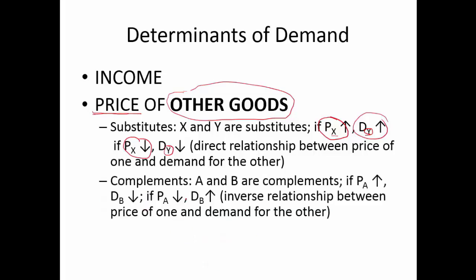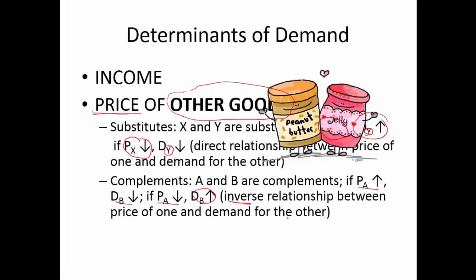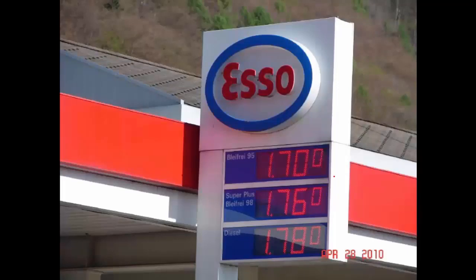Goods can also be complements — they're used together in consumption. If the price of A rises, demand for B declines, because the quantity demanded of A goes down, and if you're using less A, you're using less B too. Likewise, if the price of A goes down, demand for B goes up — people consume more A and will buy more B as well. Notice the inverse relationship between the price of one and demand for the other. A classic example: peanut butter and jelly go together, so if peanut butter becomes less expensive, people buy more of it and probably more jelly too for making PBJs.